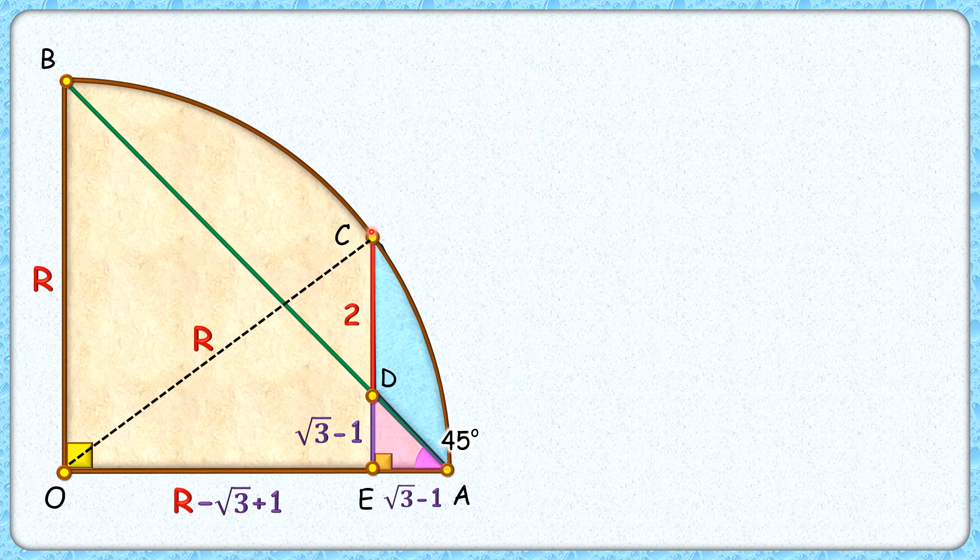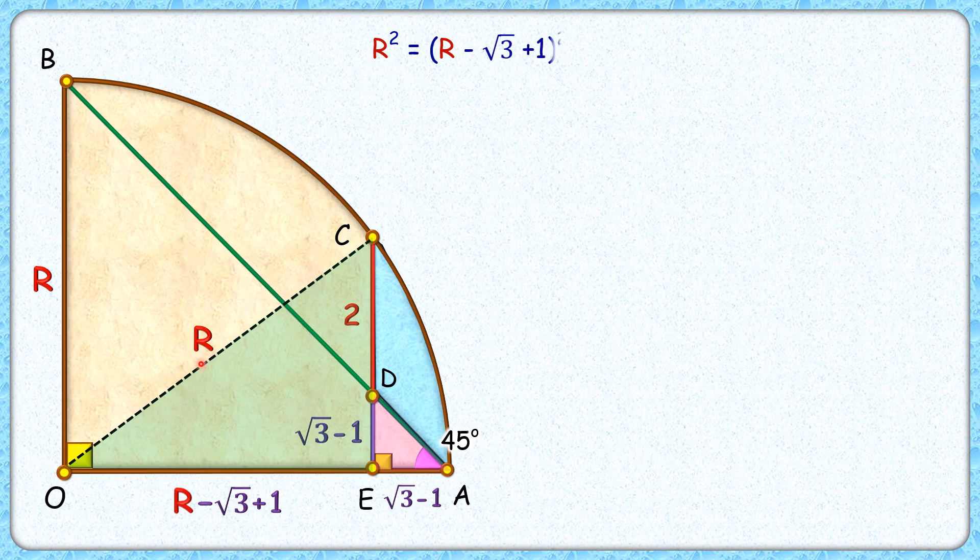Now in triangle CEO, applying Pythagorean theorem we will get R squared, that's hypotenuse squared, equals R minus root 3 plus 1 squared plus height squared. Height is root 3 minus 1 plus 2, which is root 3 plus 1. Simplifying it, opening up this bracket using the formula for a minus b plus c whole squared.